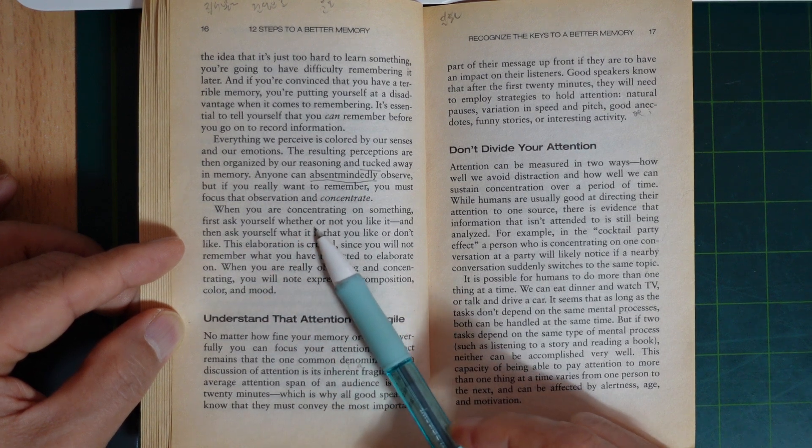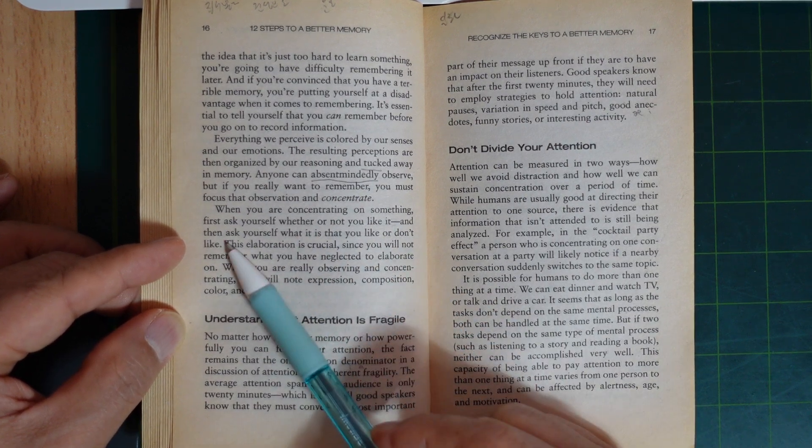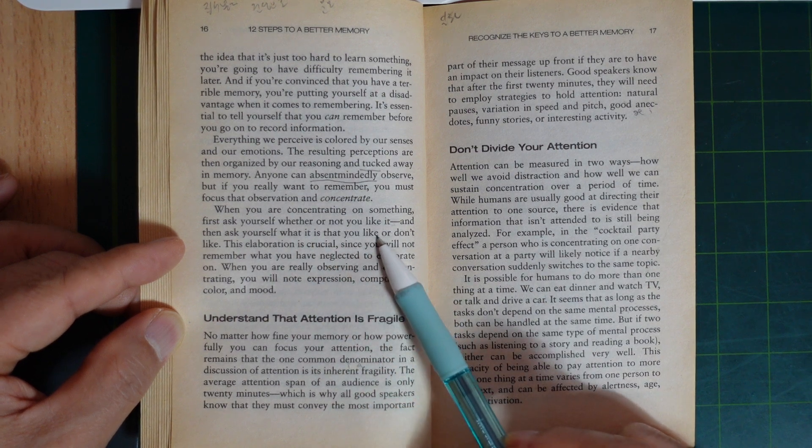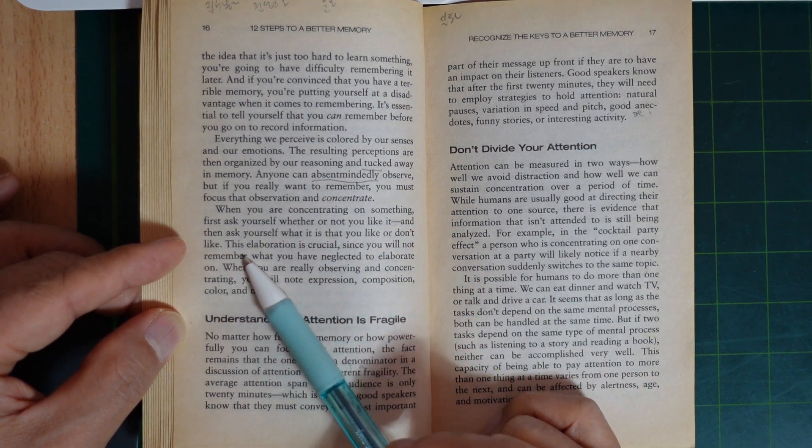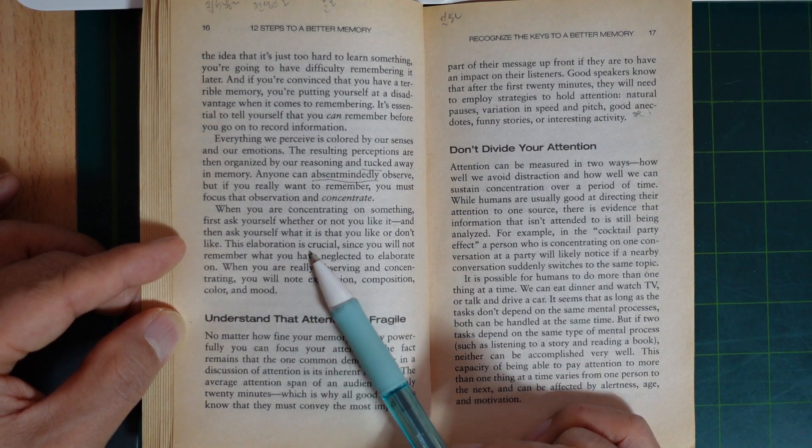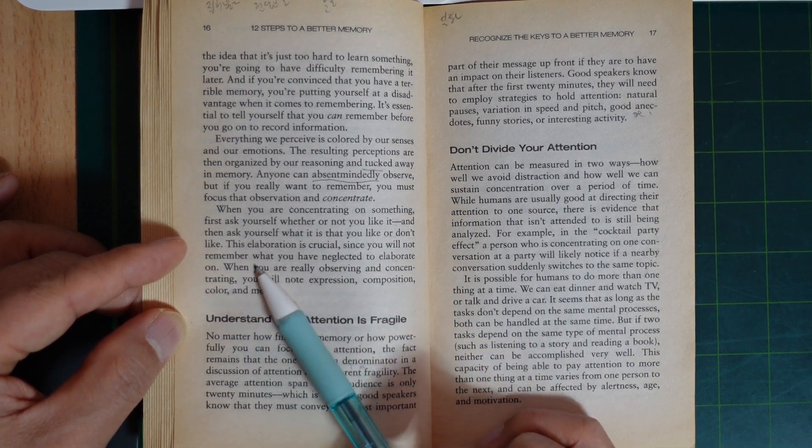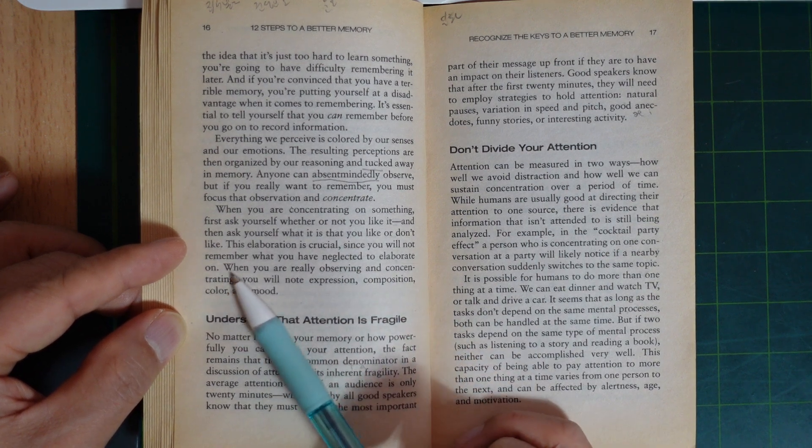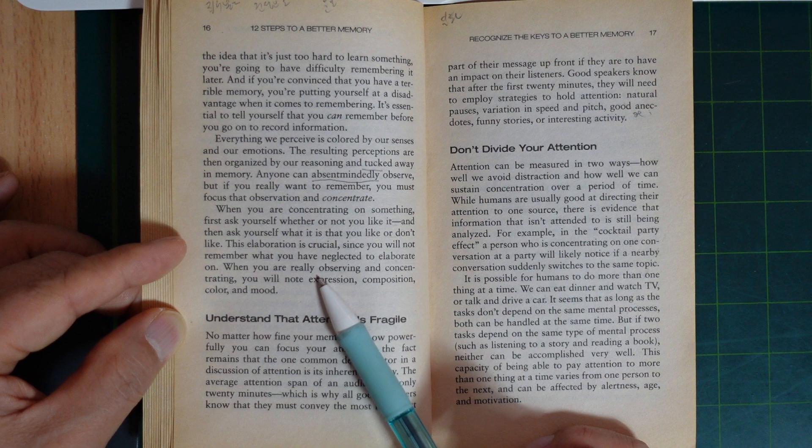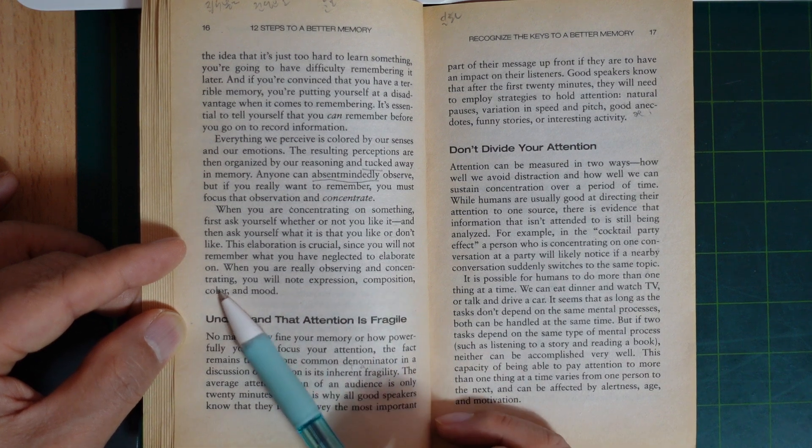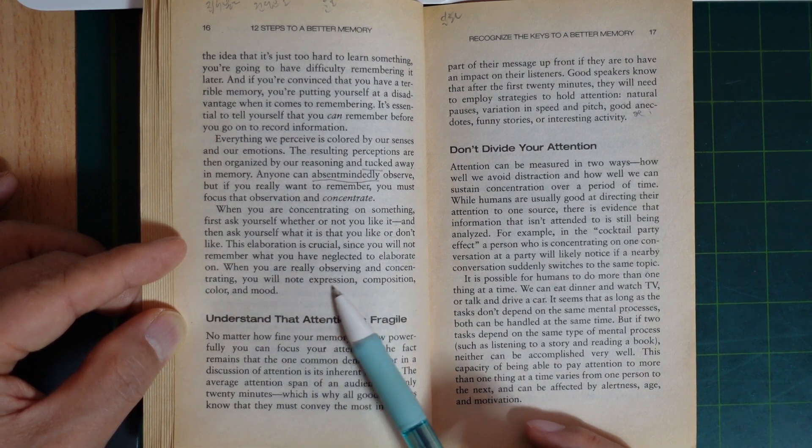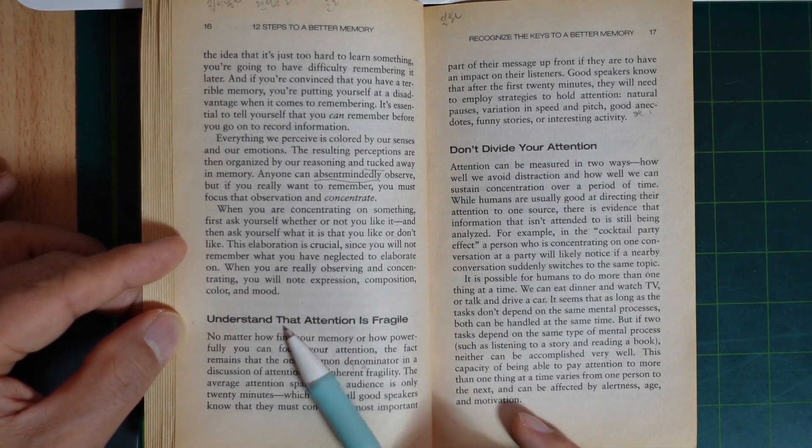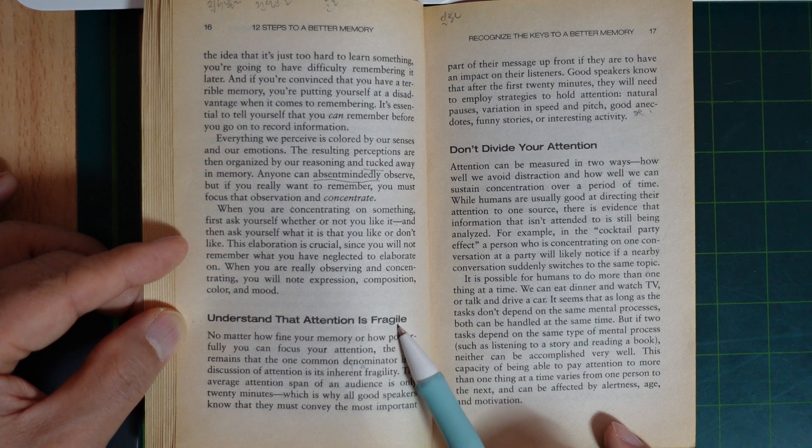When you are concentrating on something, first ask yourself whether or not you like it, and then ask yourself what it is that you like or don't like. This elaboration is crucial since you will not remember what you have neglected to elaborate on. When you are really observing and concentrating, you will note expression, composition, color, and mood.